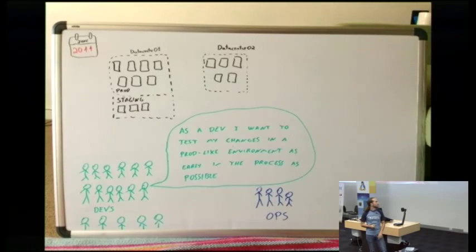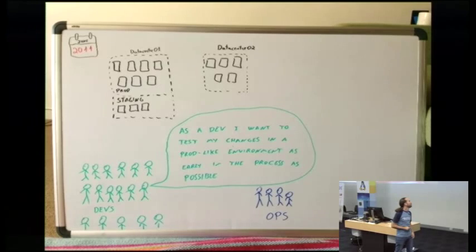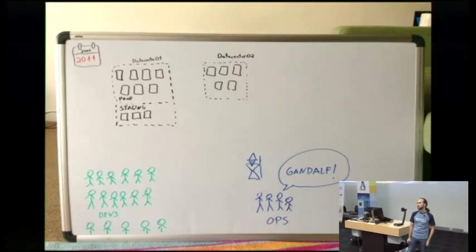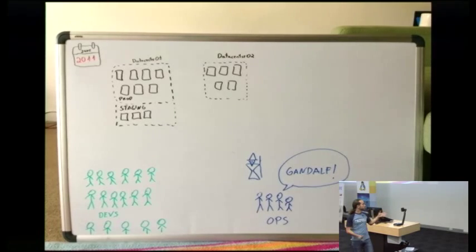So, we are into agile, so we write user stories, we don't write requirements. So, as a dev, I want to test my changes in a prod-like environment, as early in the process as possible, and I don't want to be waiting for other people. So, someone had a great idea. We created a team called Gandalf. Gandalf came to the Shire and said, I'm going to solve all these problems. You just need to hold this ring, and I'll come back later. So, Gandalf was a project that was put together. We had some people from the ops team, we had some people from the dev team, and we had some consultants coming. So, a mix of everything to solve the problem.